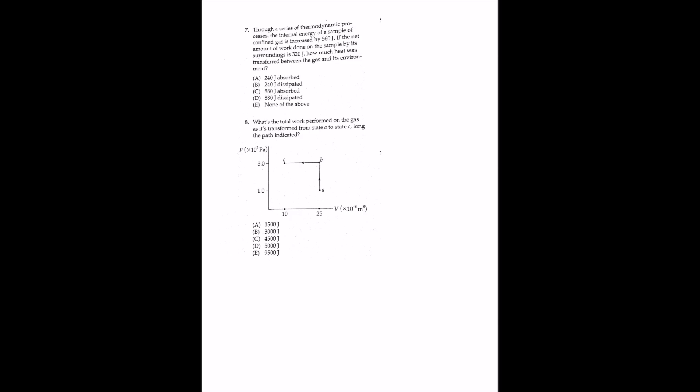For question 7, through a series of thermodynamic processes the internal energy of a gas sample increases by 560 joules. The net work done on the sample by its surroundings is 320 joules (positive, since it is work done on the gas). Using the first law of thermodynamics — change in internal energy equals heat transferred plus work done on the gas — the heat is 560 J minus 320 J, which equals positive 240 joules. The positive sign indicates heat is transferred into the gas. The answer is A.